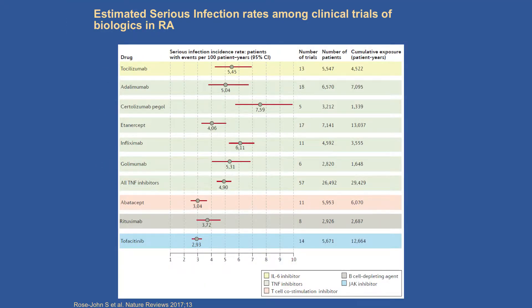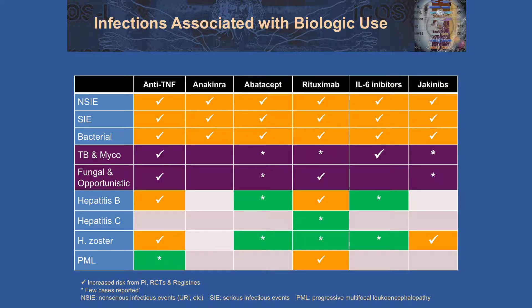I really like this figure. It shows a nice depiction of the incidence rate of serious infections with various biologics. This is from a 2015 paper by Dr. Strand, which is the most complete meta-analysis to date of clinical trials and biologics for RA. Between three and five serious infectious events per 100 patient years is about the window they all fall in. These are serious infections, meaning hospitalized or requiring IV antibiotics. I also like this table, which nicely depicts the various infectious signals with different biologics. As you can see, they all increase the overall risk of non-serious and serious infections and bacterial infections in general.